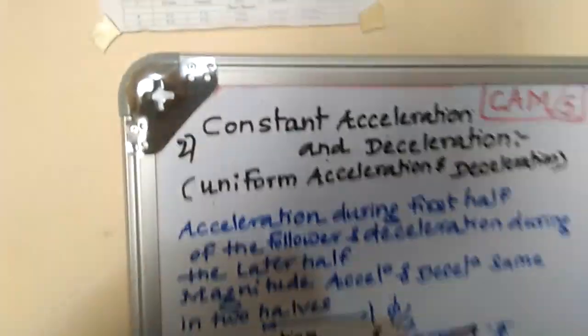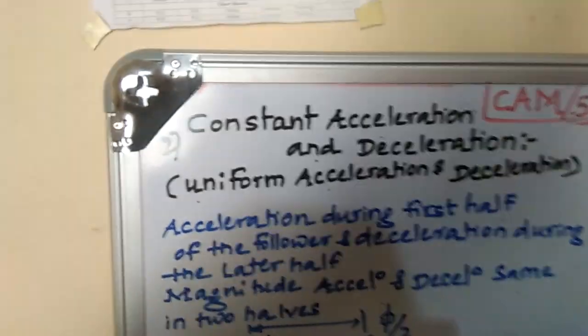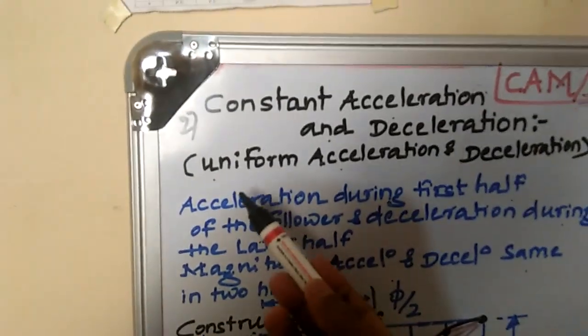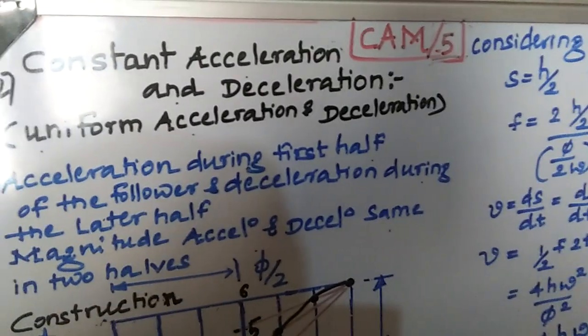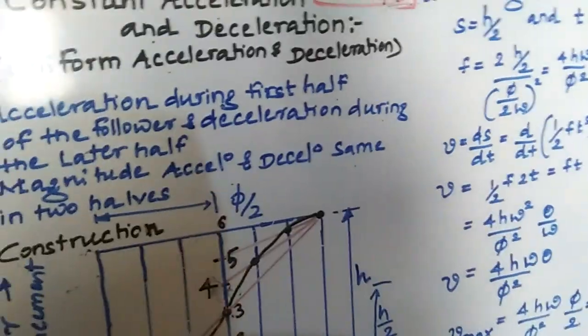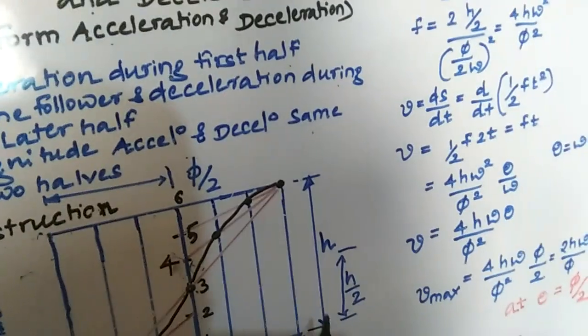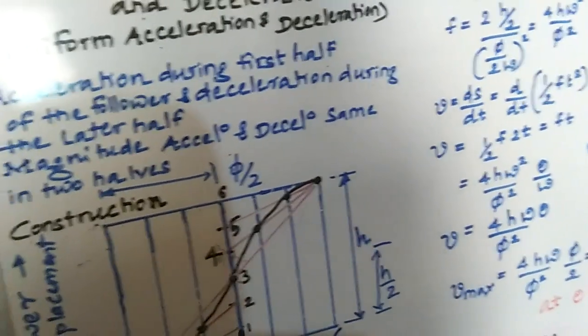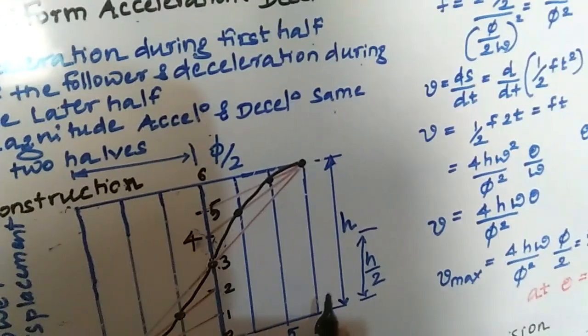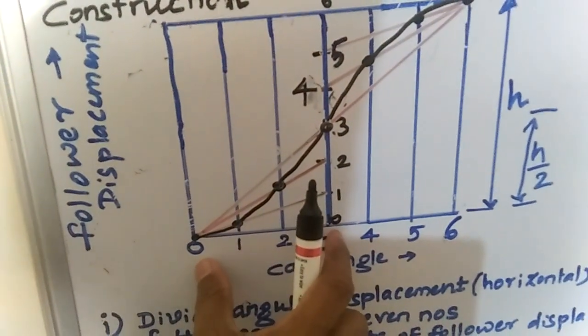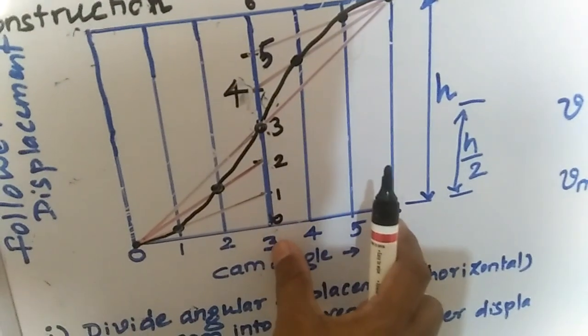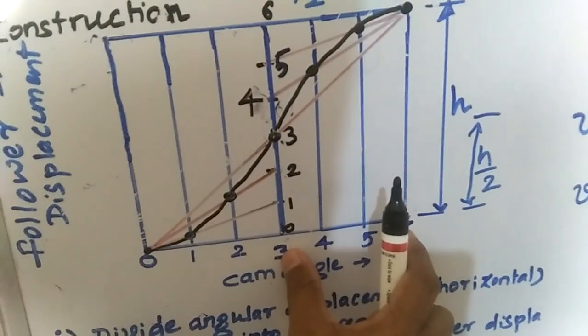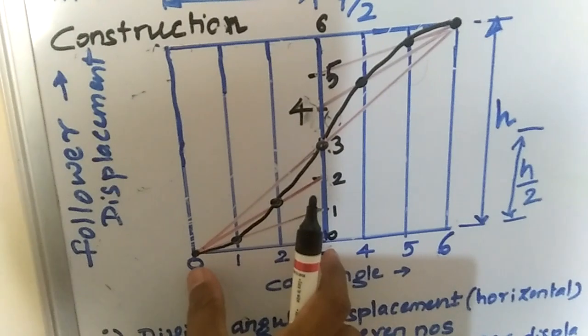Then I will come to the next motion of the follower. This is the next motion: constant acceleration and deceleration. We can call it uniform acceleration and deceleration. Look at the figure — during the first half and second half, the magnitude of the acceleration and deceleration are both the same.